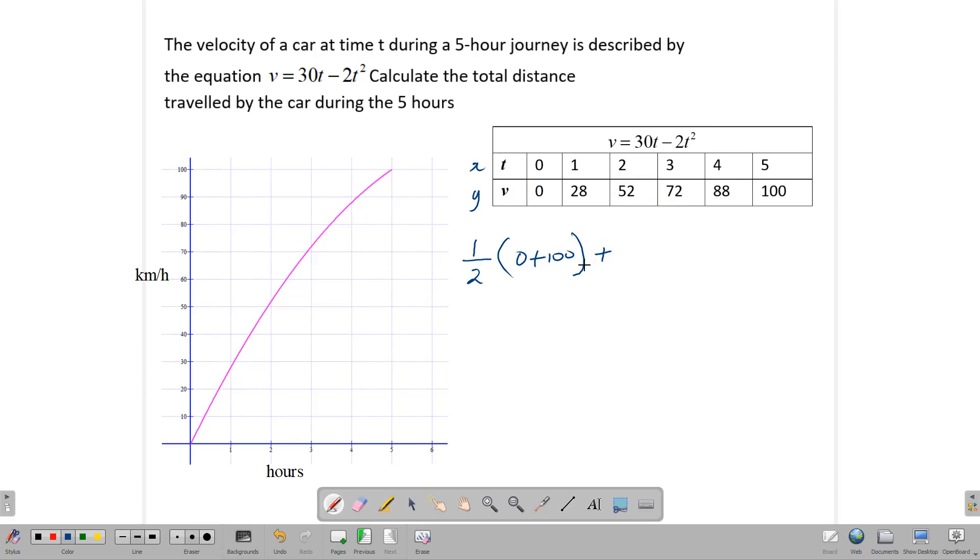The first and the last are 0 and 100. So 0 plus 100 plus all the other y values in between. What are the other y values in between? They are 28 plus 52 plus 72 plus 88. All we have to do now is add all of these values together. 0 plus 100 divided by 2 gives us 50. So we're adding 50 plus 28 plus 52 plus 72 plus 88. That gives us 290 kilometers.